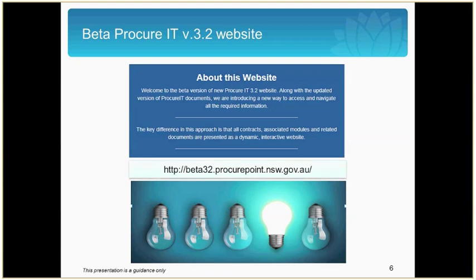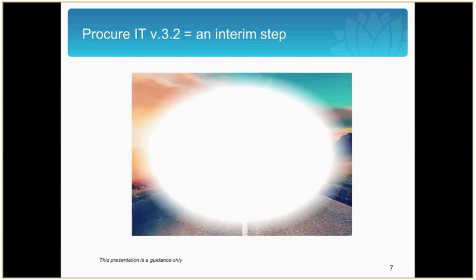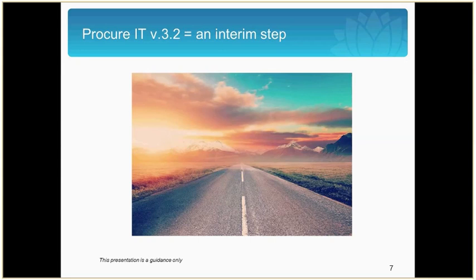A key benefit is that it now places ProcureIT into a digital space. Before discussing the key changes, it is important to note that this release of version 3.2 is not the end of the work the New South Wales Government is doing on ICT procurement reform. ProcureIT version 3.2 is an interim step and is not intended as an overhaul or comprehensive review of the whole ProcureIT framework.